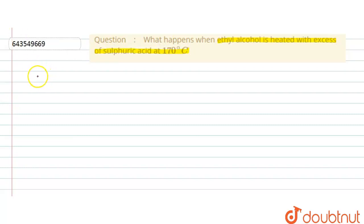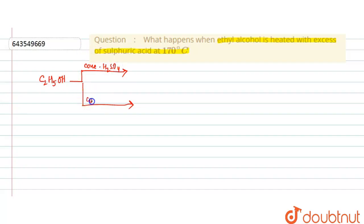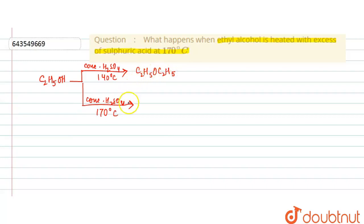Ethyl alcohol when heated with concentrated sulfuric acid forms two products. One product is formed at 140 degrees Celsius and the other one is formed at 170 degrees Celsius. At 140 degrees Celsius, diethyl ether is formed. At 170 degrees Celsius, ethene is formed.